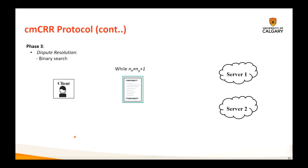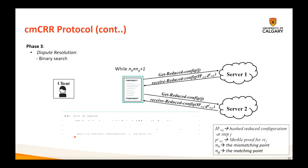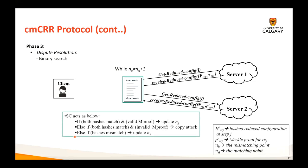The dispute resolution phase consists of two parts: a binary search through which it identifies the point of disagreement between the two parties, and a single-step execution on the Ethereum network to identify the malicious server. During the binary search stage, the smart contract asks each server to reveal the hash of an intermediate computational state for a specific index together with a Merkle proof. The smart contract checks if both server hashes match or not. If they match, the smart contract verifies both proofs.